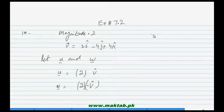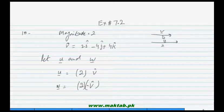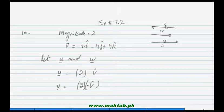So u vector has magnitude 2 and direction v, and the second vector w has magnitude 2 but direction minus v-hat. Minus v-hat means the vector is parallel but the direction is opposite.